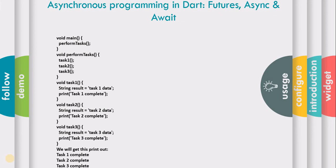In this video we will learn about asynchronous programming in Dart, which covers Future, async, and await. So far we have been doing synchronous programming, where tasks are executed in a specific order. We have a void main with a perform task function containing task one, task two, and task three. They execute in the order written, so we get task one complete, then task two complete, then task three complete.